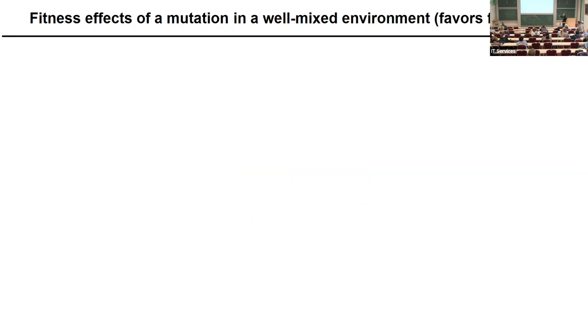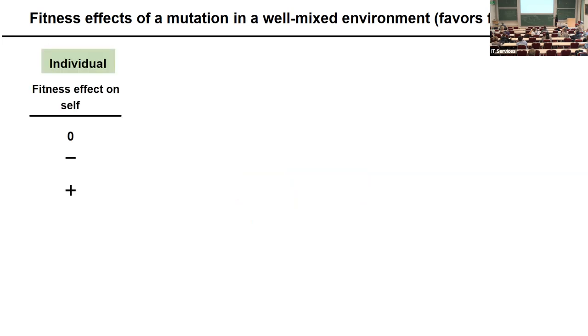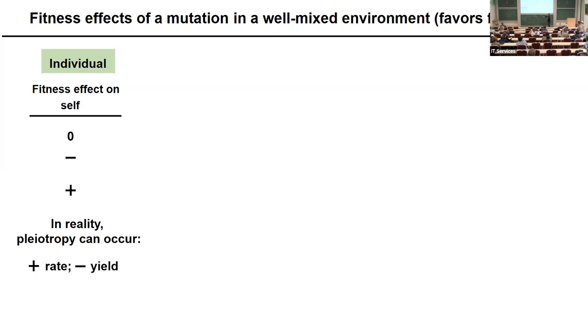Let's consider the fitness effects of a mutation. In the simplest scenario — a well-mixed environment that always favors the fastest growers — the fitness effect on self can be zero, minus, or plus: neutral, deleterious, or beneficial. But in reality it's more complex because pleiotropy can occur. For example, a mutation that increases your growth rate could reduce yield, so if cells are in an environment that favors high yield, this mutation will become deleterious. It's very environment-dependent because of pleiotropy.